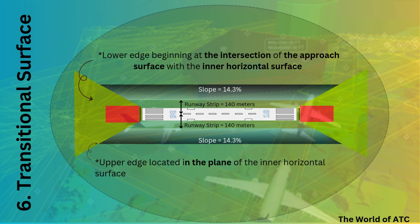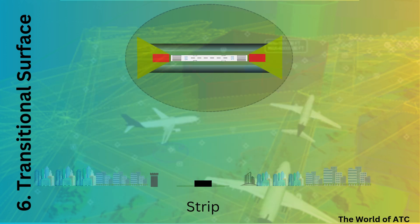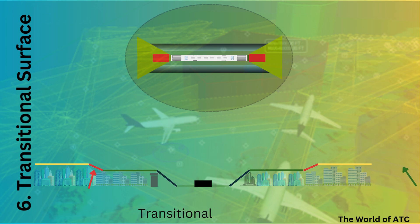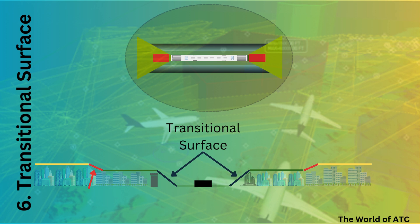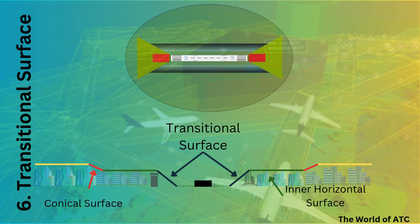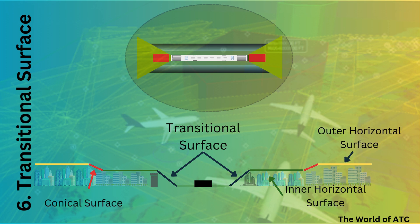Moving on to the profile view of all the surfaces studied so far: the runway is shown in black, then the runway strip extends 140 meters from the runway centerline to each side. Thereafter comes the transitional surface with a slope of 14.3%, followed by the inner horizontal surface extending to 4,000 meters from the runway threshold. Then the conical surface in red with a slope of 5% leads to the outer horizontal surface, which extends to 15 kilometers from the aerodrome reference point, allowing obstacles and buildings up to 150 meters above ground level.